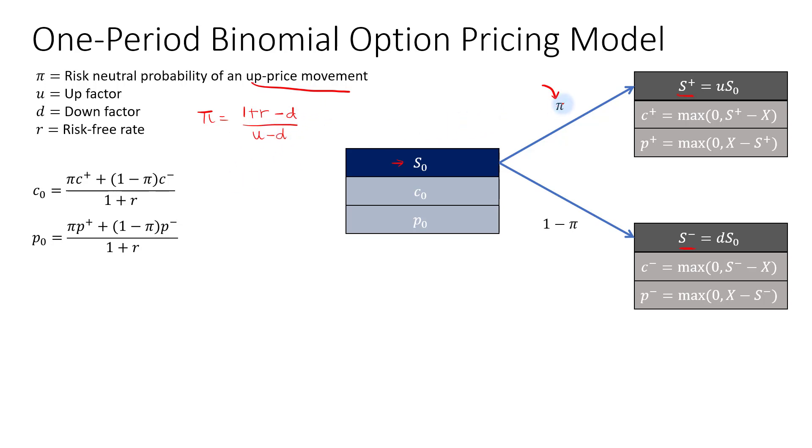We will use the relationship that if you were to take the risk-neutral probability, multiply by S plus, and then we add it to 1 minus pi, multiply by S minus. So that's the weighted share price after one period using the risk-neutral probability. We discount it at the risk-free rate. And once you discount it back by one period, we should get the current underlying price.